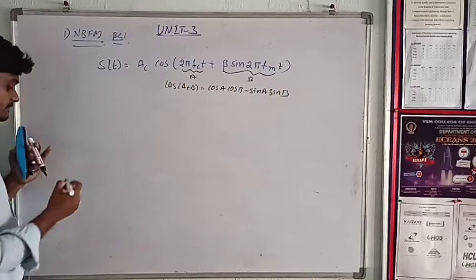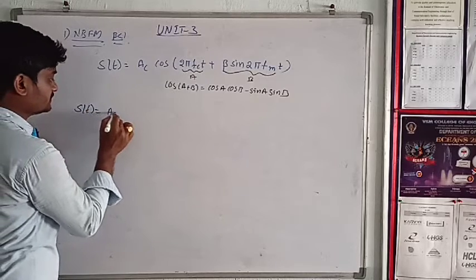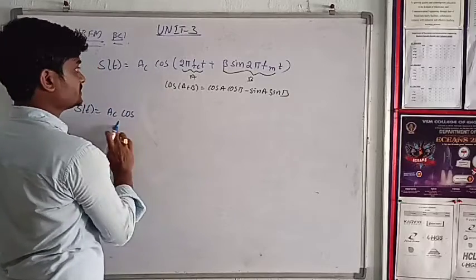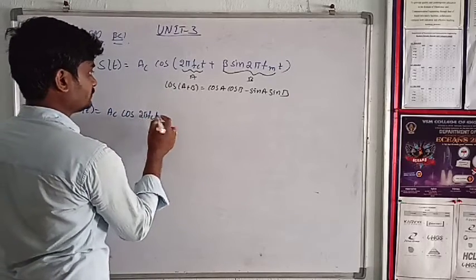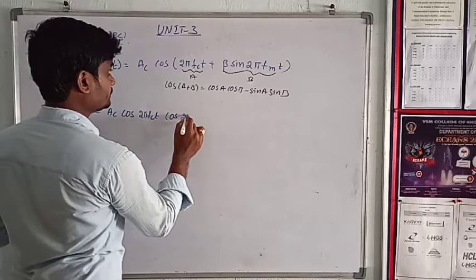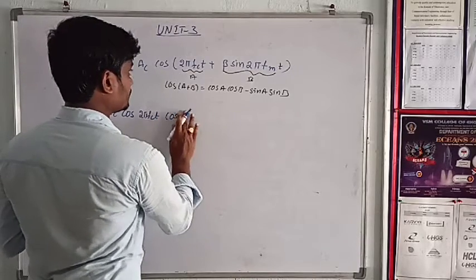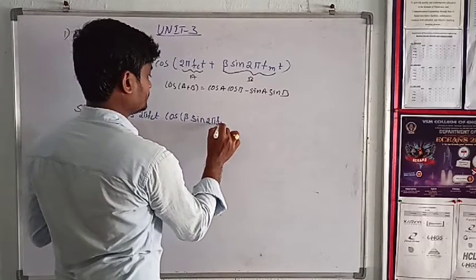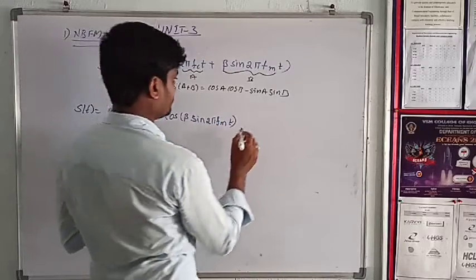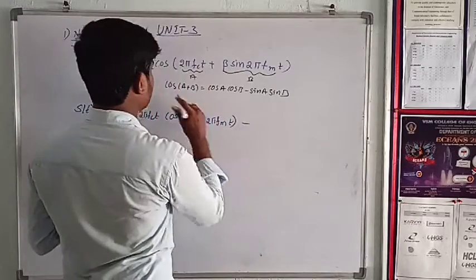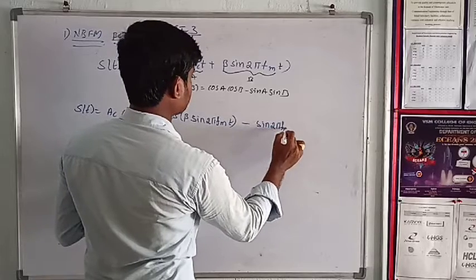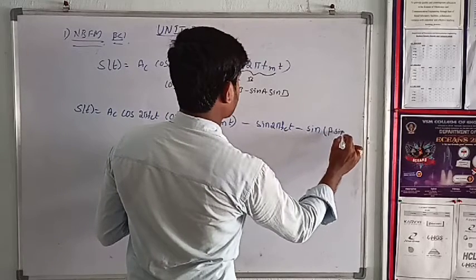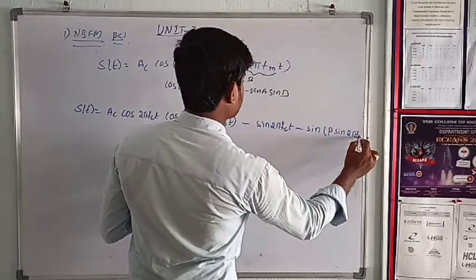The equation of FM is S of t equal to AC cos A cos B. AC cos 2 pi FC t into cos beta sin 2 pi FM t minus sin 2 pi FC t minus sin beta sin 2 pi FM t.